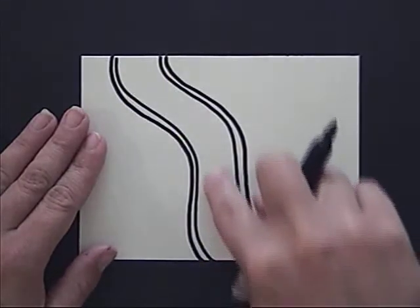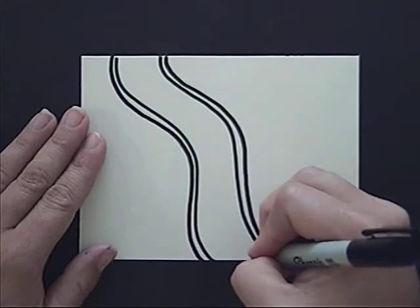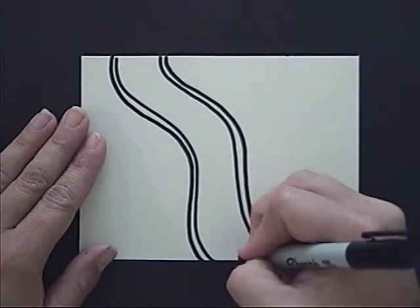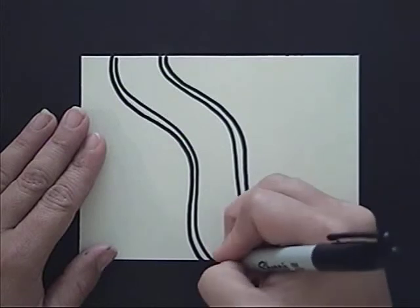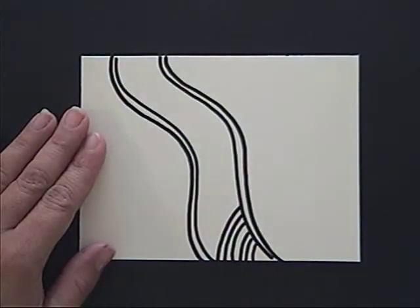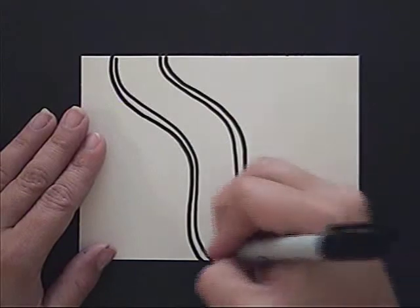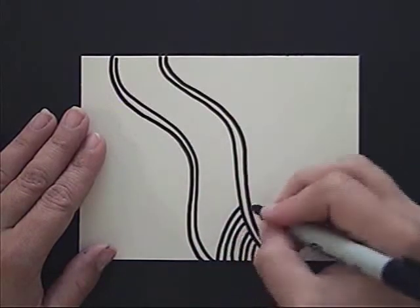Now we're going to fill in this center section. We'll do that by repeating curved lines. You can choose a number and maybe do 6, 7, 2, whatever your number might be, and you'll go in one direction.